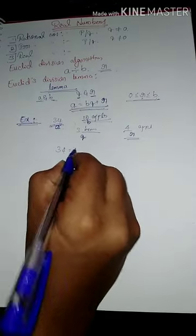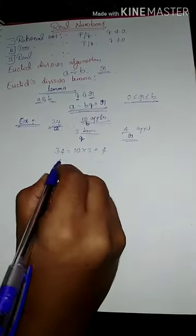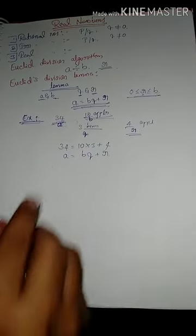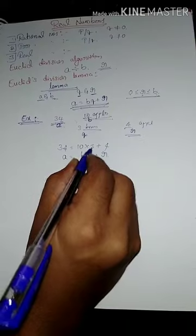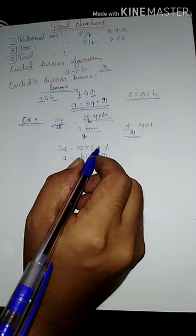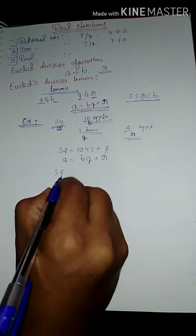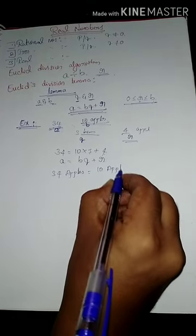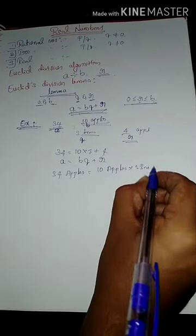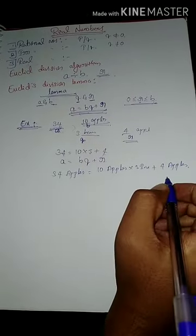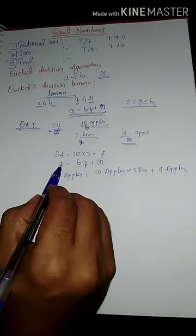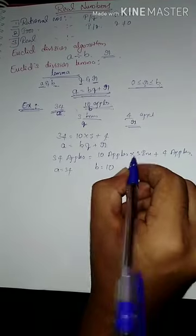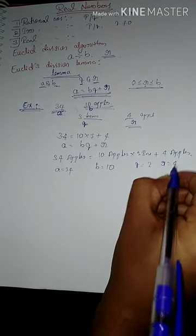According to Euclid Division Lemma, this is written as 34 = 10 × 3 + 4. We know that A = BQ + R is the Euclid Division Lemma. So A is 34, B is 10, Q is 3, and R is 4.